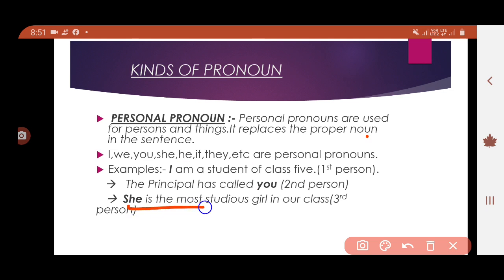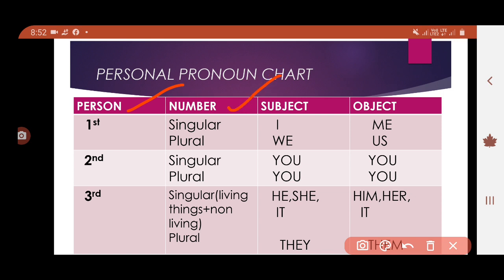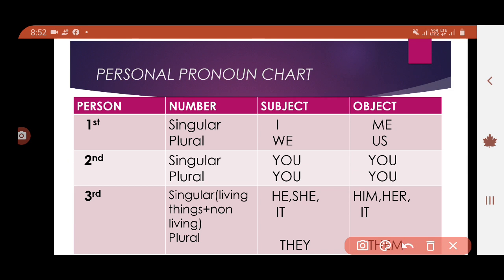'She is the most studious girl in our class' — here 'she' is the personal pronoun. You can notice that in the examples I have written first person, second person, and third person in brackets. This is the personal pronoun chart from your book. It has four columns: person, number, subject, and object.